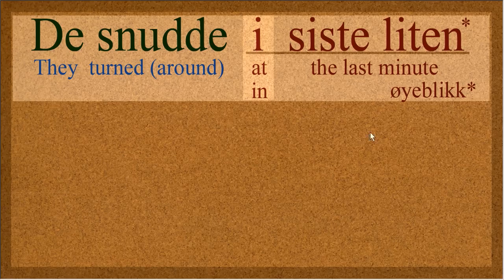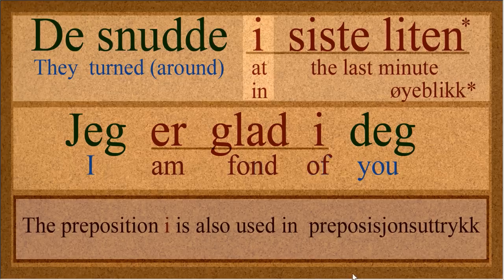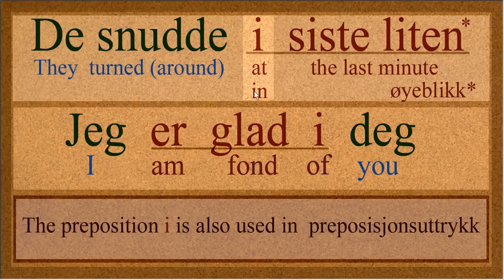I is used in these phrases as well. I siste liten, i siste øyeblikk — these mean the same thing, 'at the last moment.' Jeg er glad i deg — I am fond of you. Be careful with this one; don't say that to everybody because they might take it the wrong way. The point is that i is used in these phrases just as much as på is. So you want to be on the lookout and remember them.